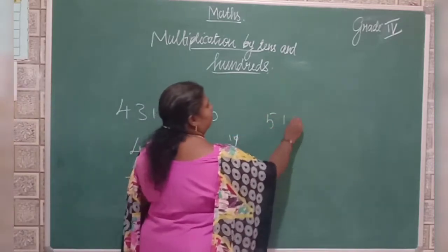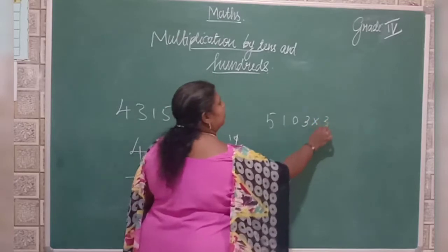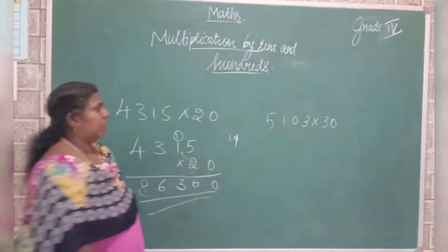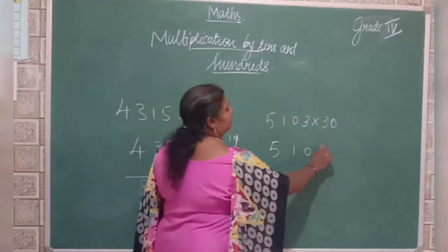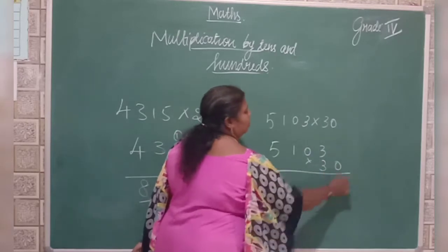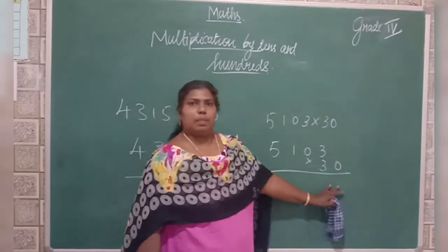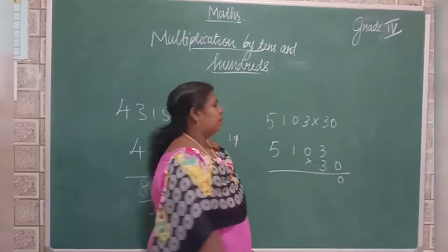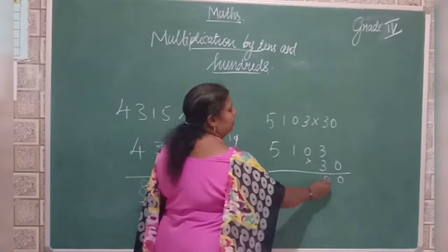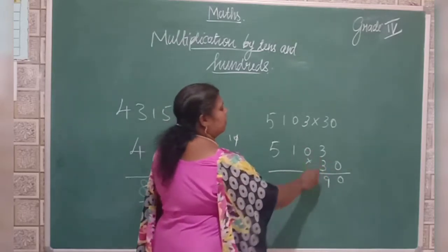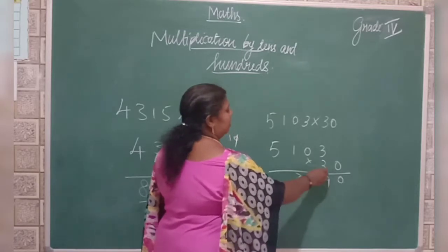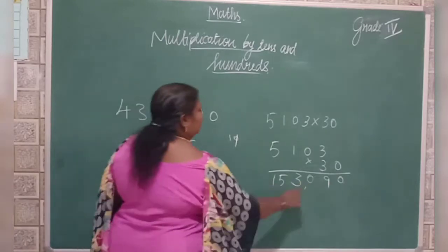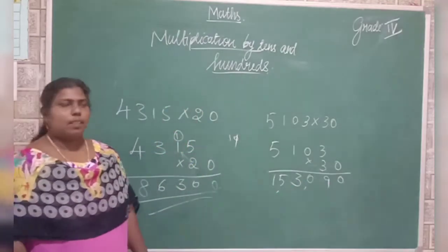Another example: 5,103 into 30. Write it down like that. Zero as it is again. Then use the third table. 3×3 is 9, 3×0 is 0, 3×1 is 3, 3×5 is 15. So the answer is 153,090.